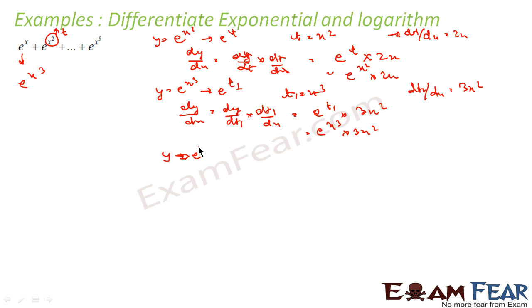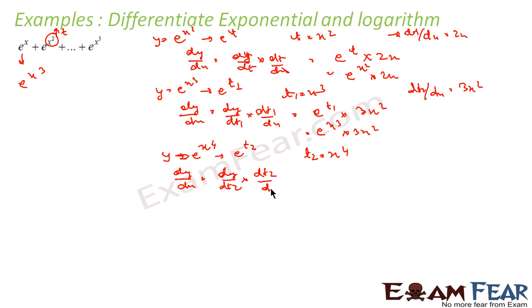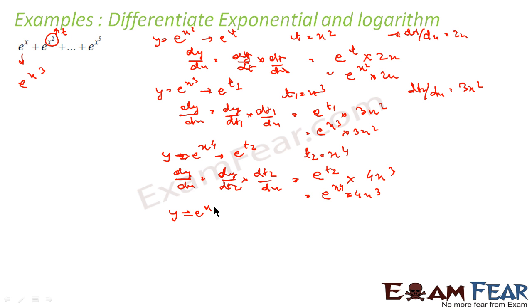Similarly, for e^(x⁴): y = e^(t2) where t2 = x⁴. So dy/dx = (dy/dt2) × (dt2/dx) = e^(t2) × 4x³. Substituting t2 = x⁴, this becomes e^(x⁴) × 4x³.